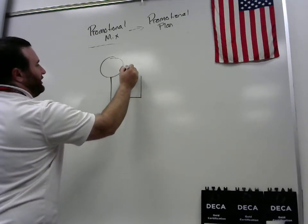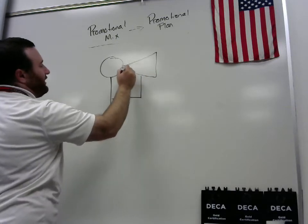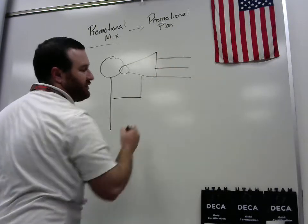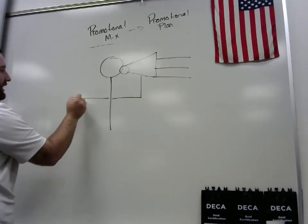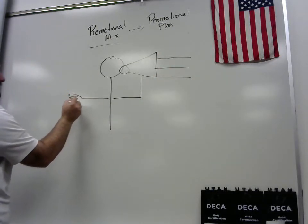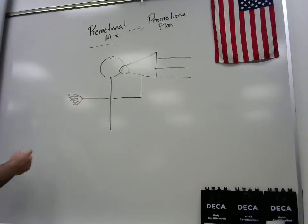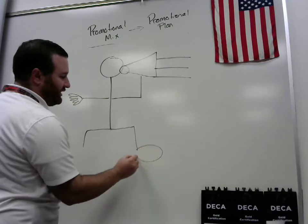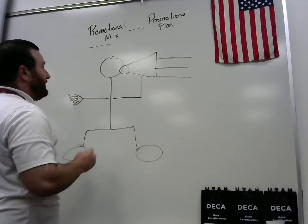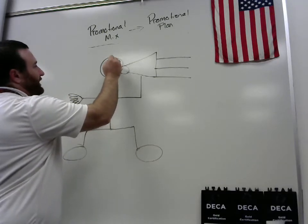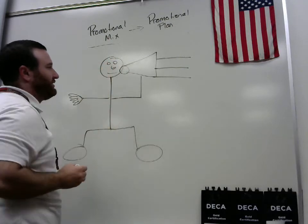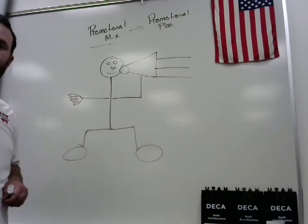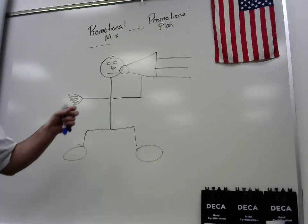Promotion Man has a big megaphone with three big things of sound coming out, a hand with five fingers reaching out, and he likes to ride horses so he's a little bow-legged. His name's Promotion Man and he's happy because he lets everybody know about all these great things.